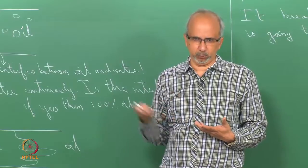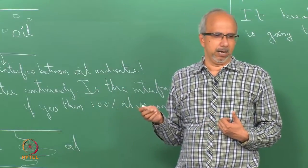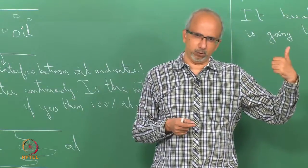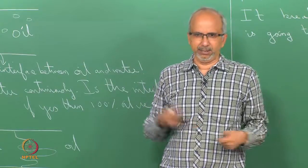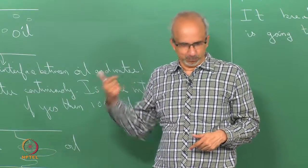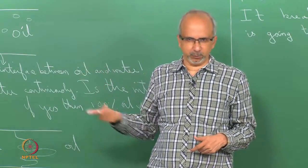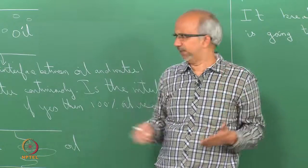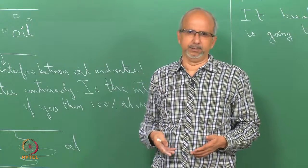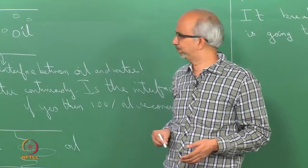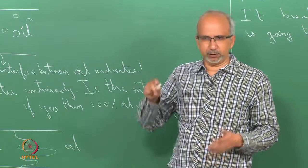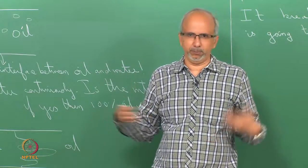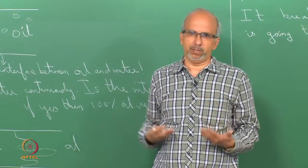In the Rayleigh-Taylor problem, we included surface tension but let go of viscosity. Here we are doing the opposite — keeping viscosity but letting go of surface tension to begin with. Also, there the base velocity was zero; here the base velocity is not zero because there is continuous pumping of one liquid over the other.